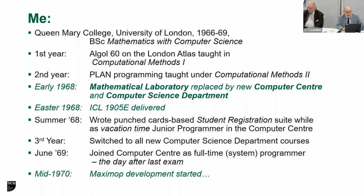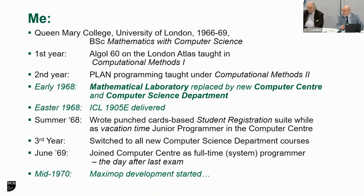Around Easter 1968, the ICL 1905-E was delivered. Having discovered the great fun of programming in 1900, that summer I got a temporary job in the computer center. I wrote the student registration suite for the BSc course unit range that summer, which I then had to use myself to register for my third year — which is quite amusing. As you might probably guess, we didn't attempt the exam results system until the year after.